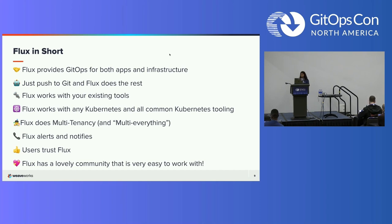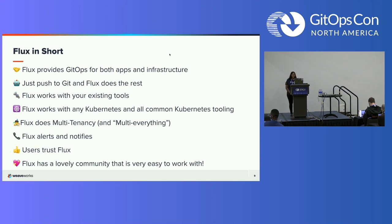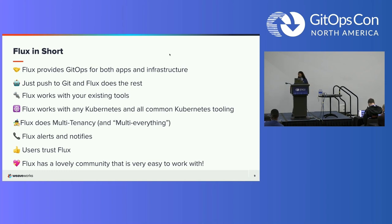It also works with any Kubernetes and all common Kubernetes tooling — it really just falls into place with what you have set up already. It does multi-tenancy and, as we like to say, multi-everything. It uses true Kubernetes RBAC via impersonation and supports multiple Git repositories. Multi-cluster infrastructure and apps work out of the box with cluster API. With Flux, you can use one Kubernetes cluster to manage apps in either the same or other clusters, spin up additional clusters itself, and manage clusters including lifecycle and fleets as well.